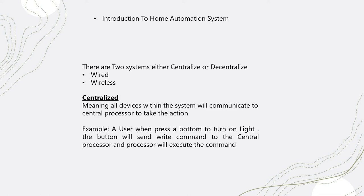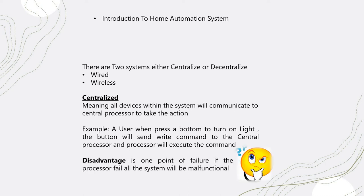For example, if a user wants to turn on the light in a room, they press the button. The button does not send the command directly to the actuator responsible for turning on the light — it goes to the processor, and the processor executes the command. The main disadvantage of centralized systems is what we call a single point of failure: if the central device malfunctions, the entire system in your home will be completely non-functional.